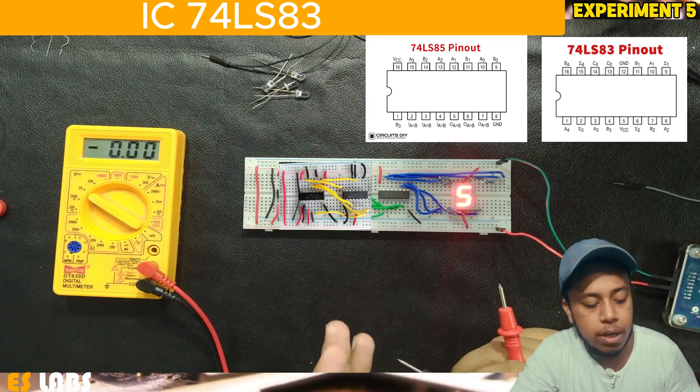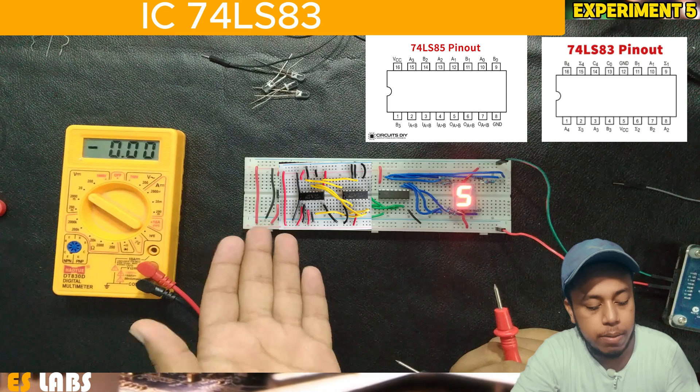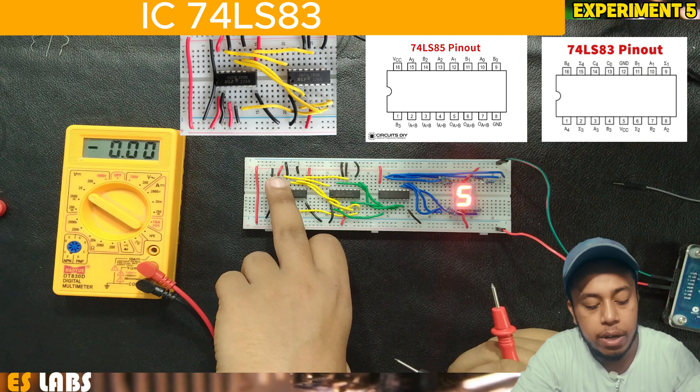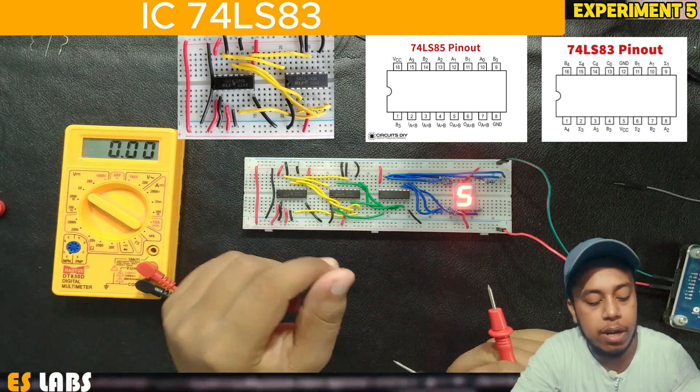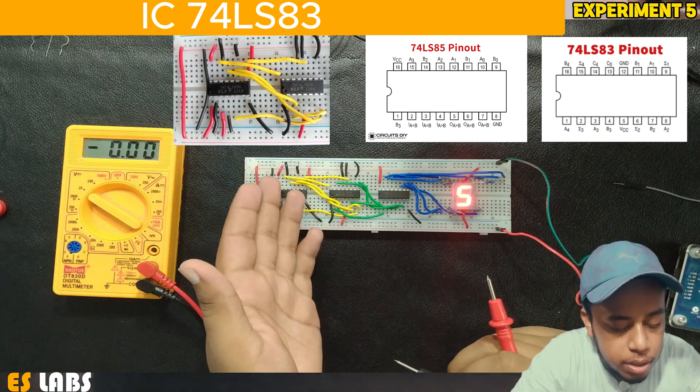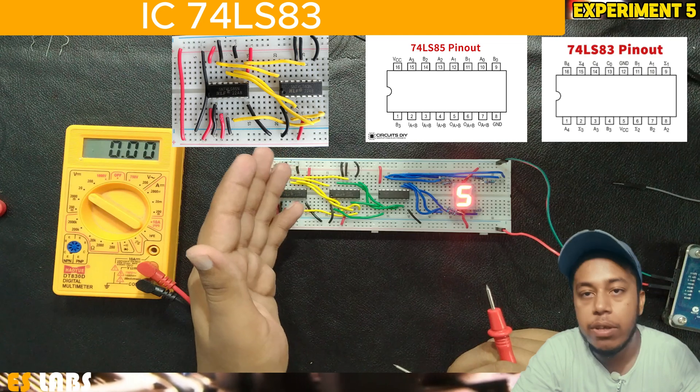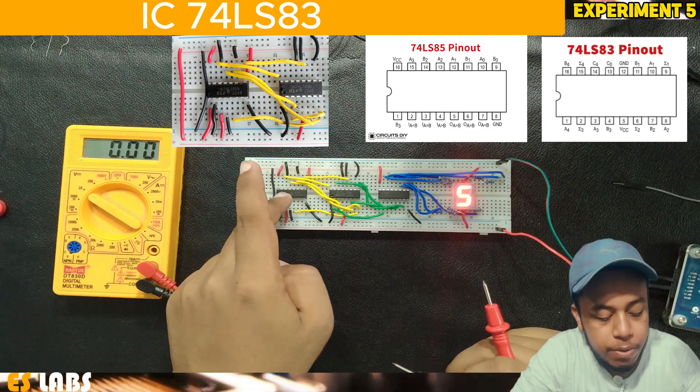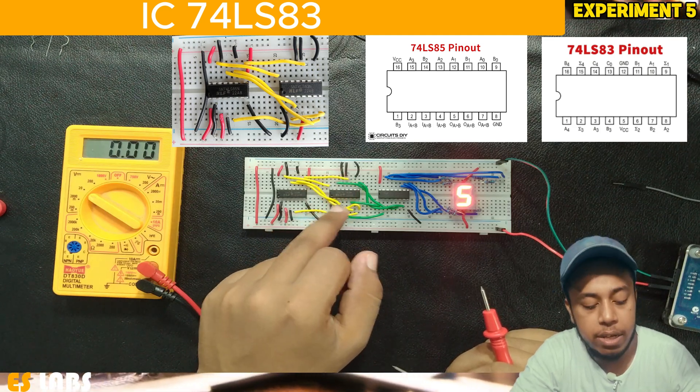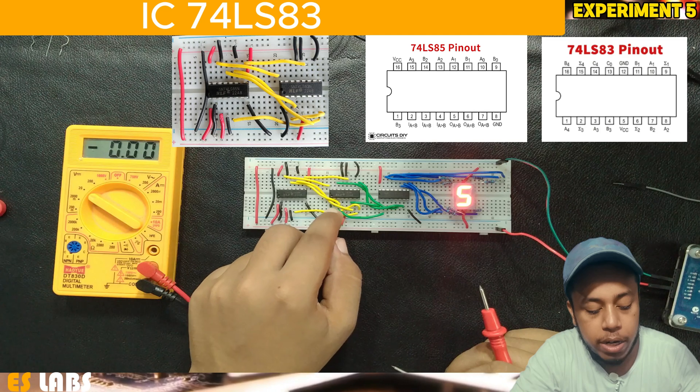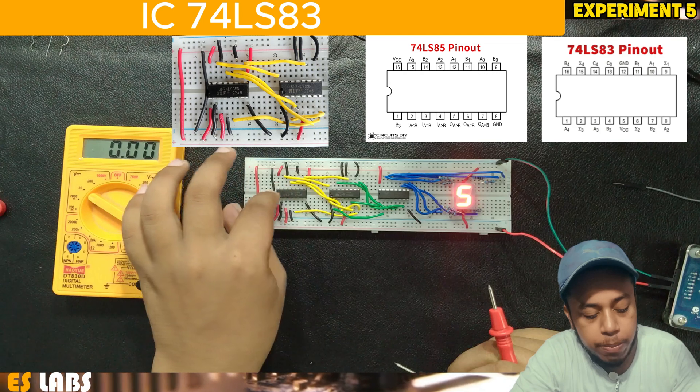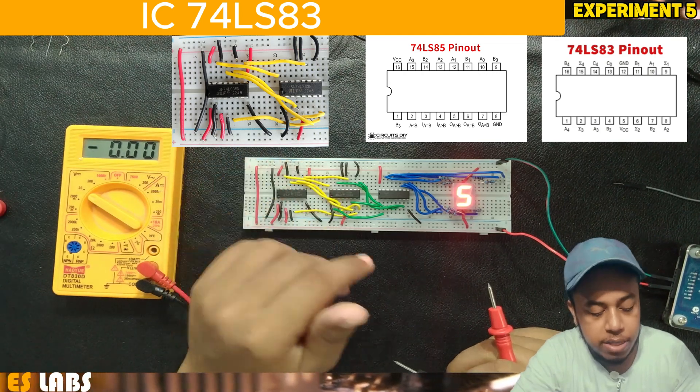Now we look at the connection between the comparator and the adder. I have connected A3 of the comparator with B4 of the adder. Similarly A2 is connected to B3, A1 to B2, and A0 to B1. I have also connected pin 5 of the 74LS85 to pin 8 of the 74LS83, and shorted pin 3 and pin 8 of the adder together. This is the connection between both ICs.